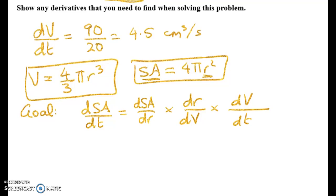So dS by dr is equal to 8 pi r. dV by dr, which is going to give us this one when we take the reciprocal, will give me 4 pi r squared and this one we've got already.